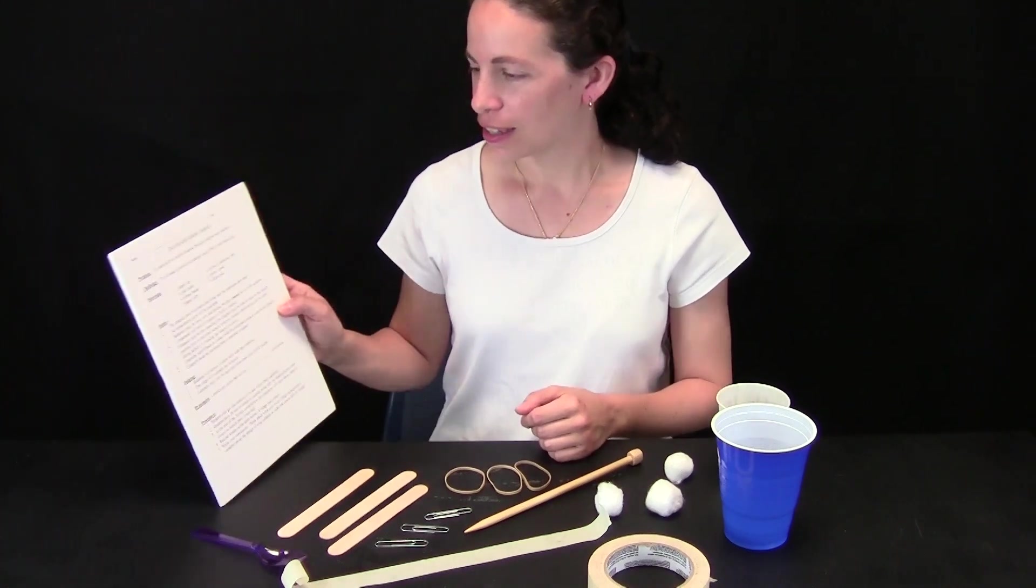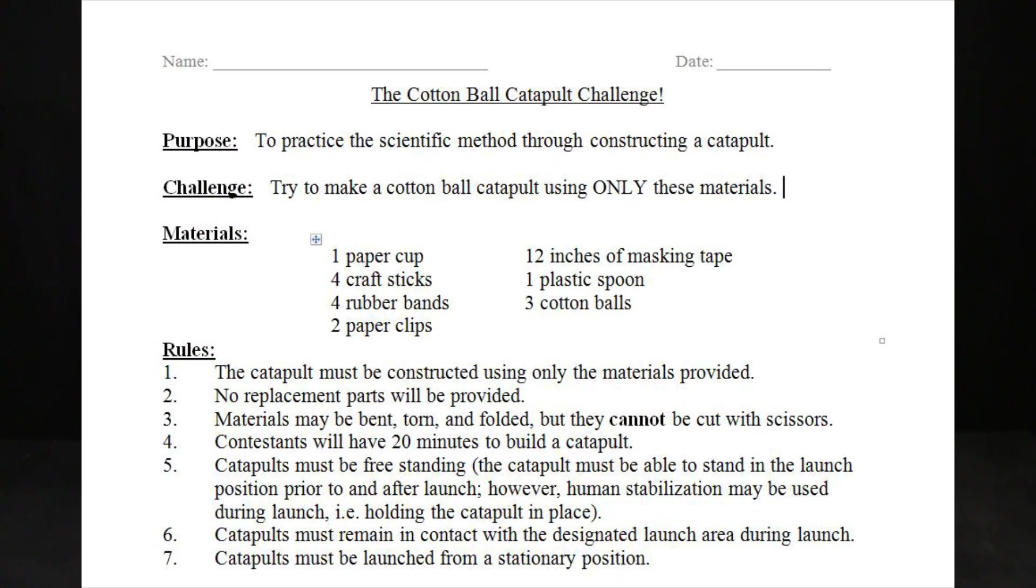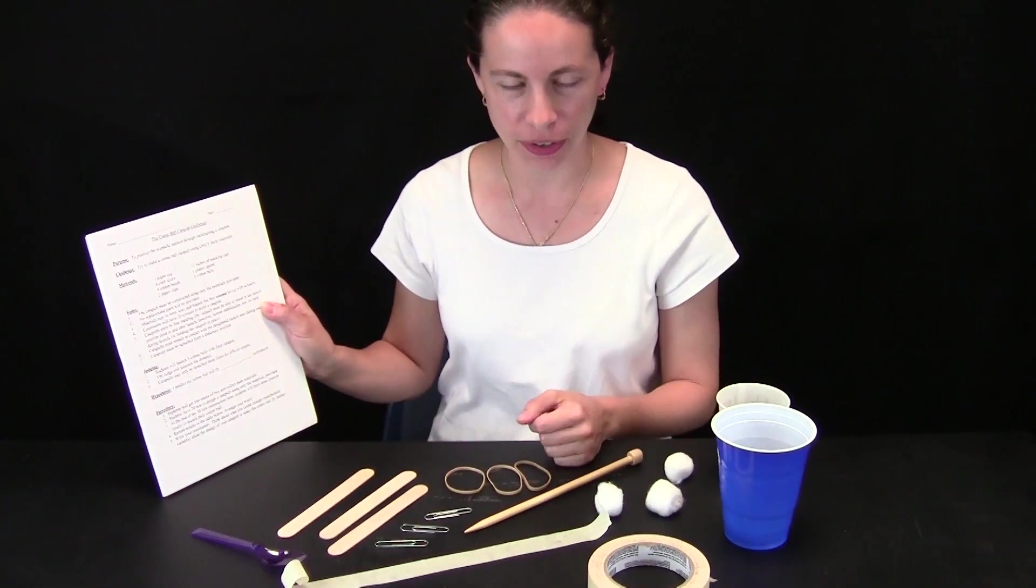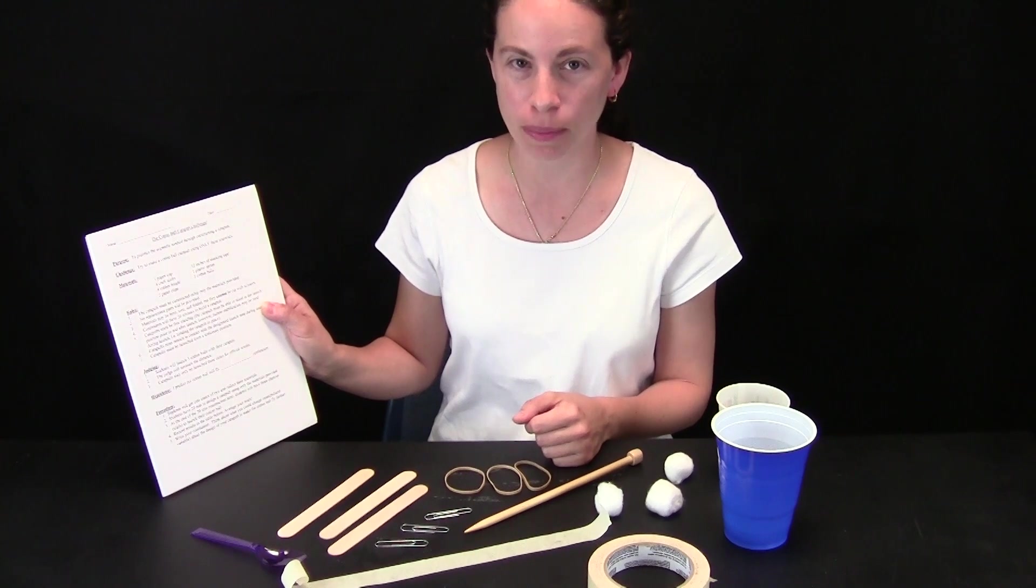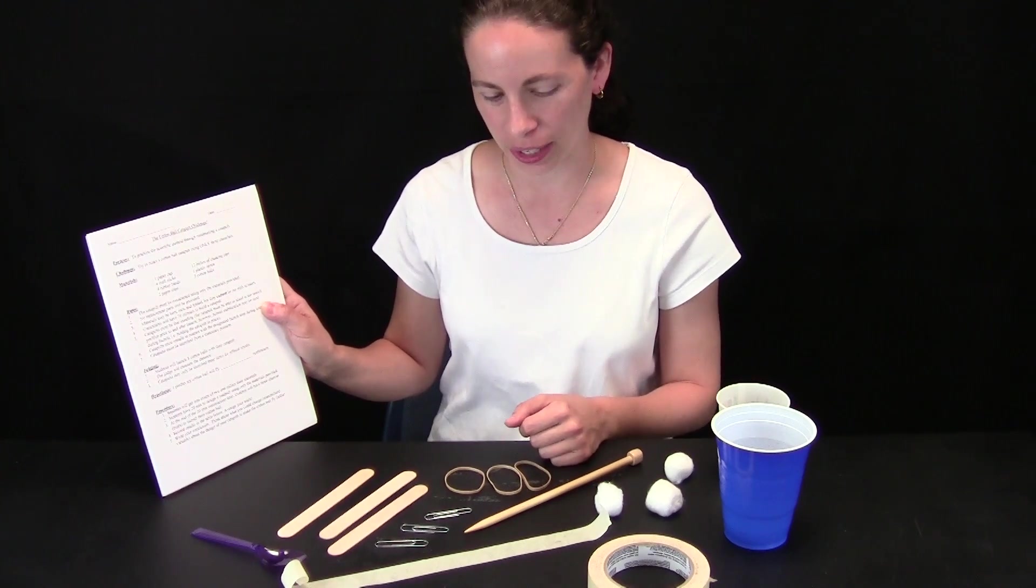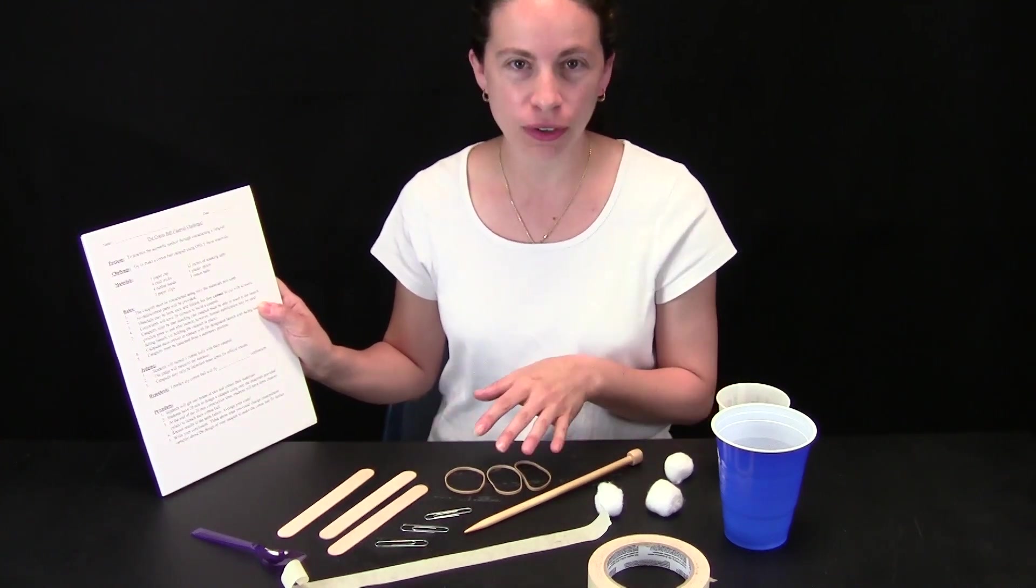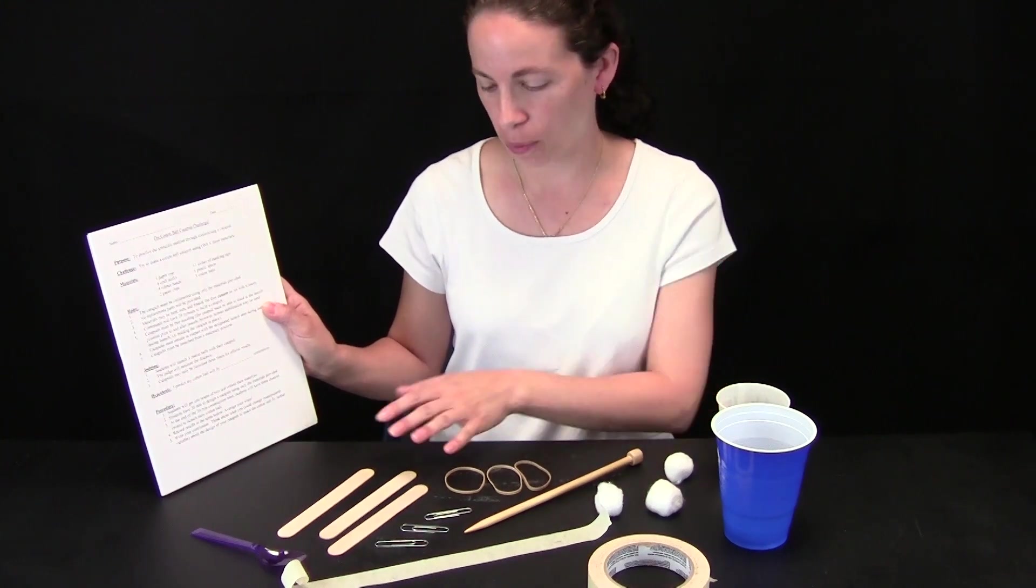On the worksheet are the rules that each group has to abide by. The catapult must be constructed using only these materials and no replacement parts will be provided, so they need to work carefully. They can use all of the materials or just some of them. If they don't want to use a craft stick, they don't need to.